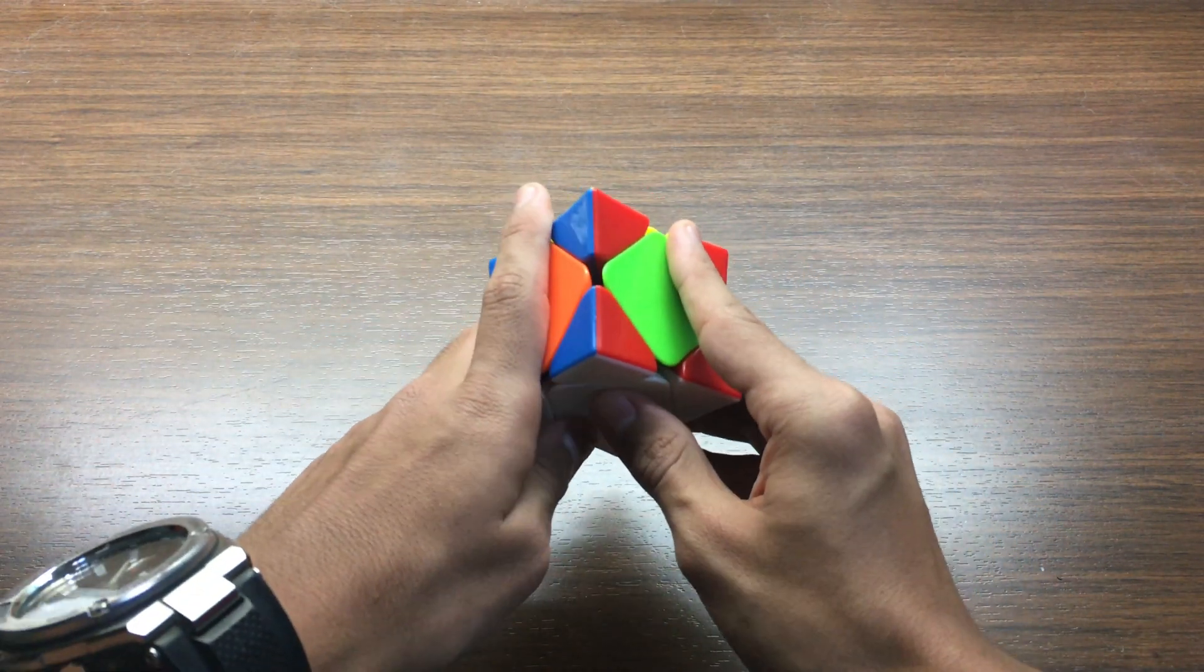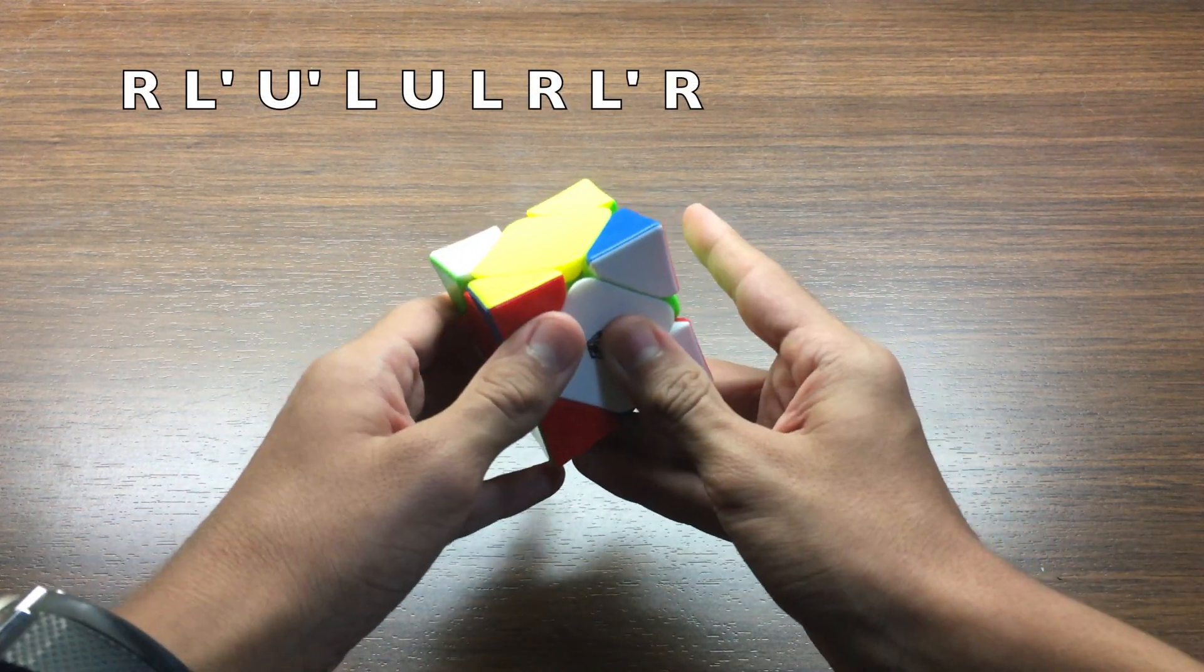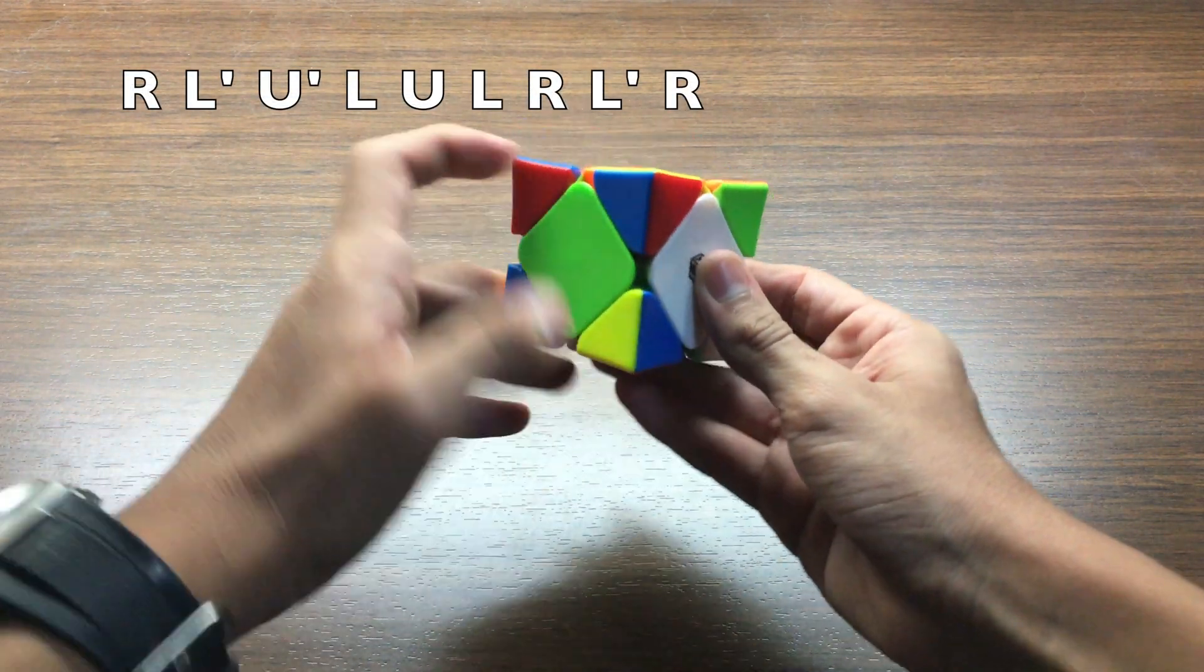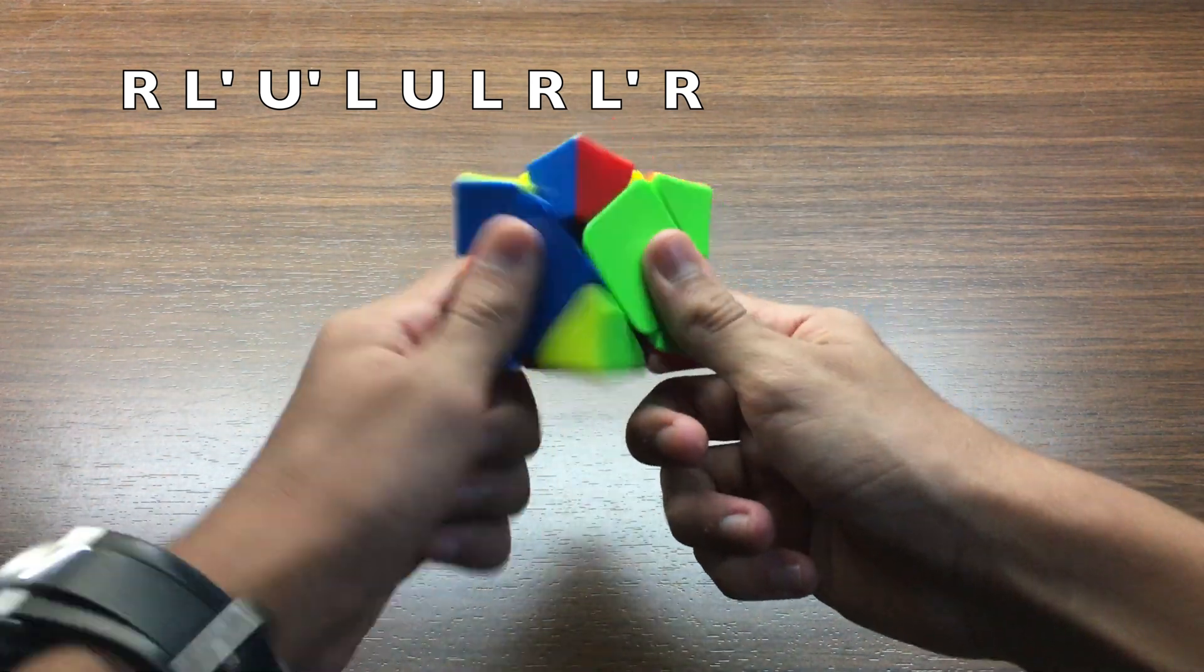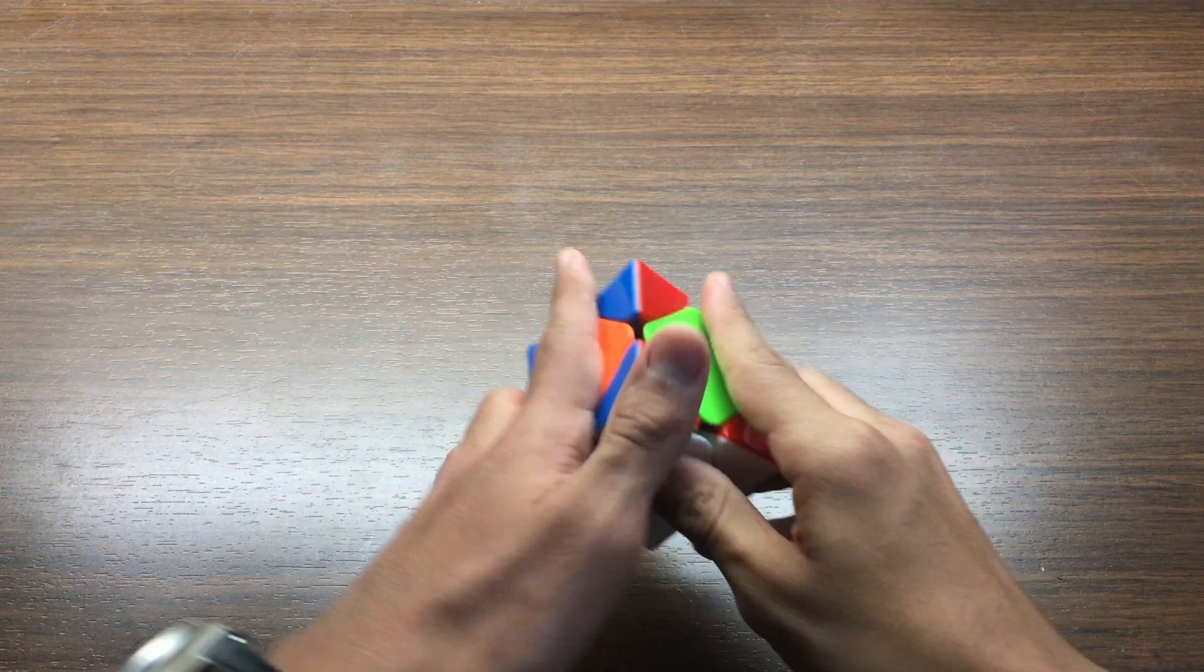It goes like this: R L prime U prime L U L R L prime R. And here's how it goes faster.